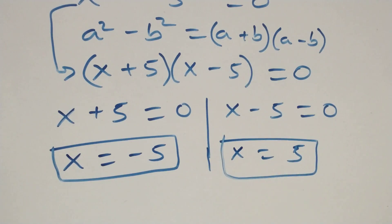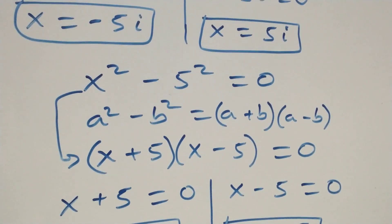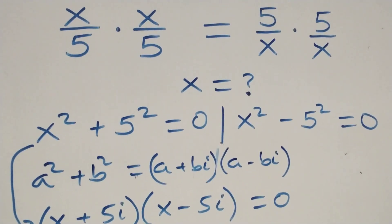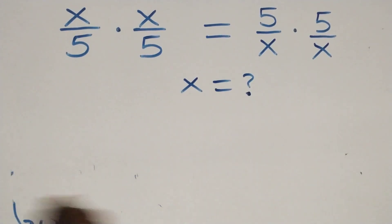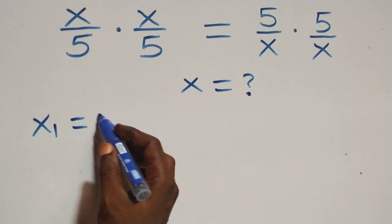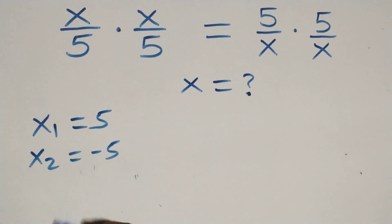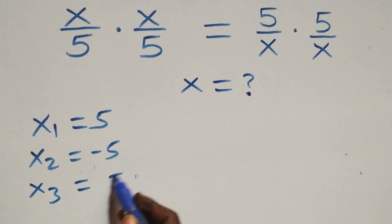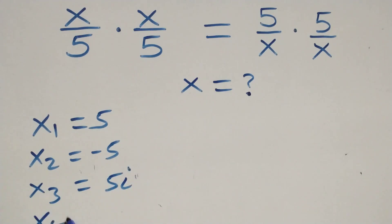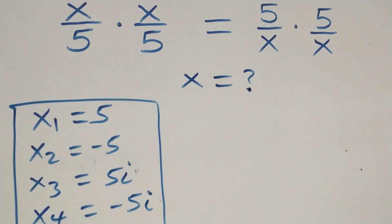At this point, we have 2 real solutions and 2 complex solutions, making 4 solutions together. Writing them out: x1 = 5, x2 = minus 5, which are the two real solutions; and x3 = 5i (complex), and x4 = minus 5i, which is also complex. So we have 4 solutions: 2 real and 2 complex.